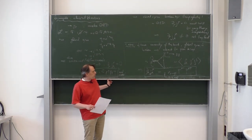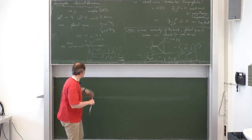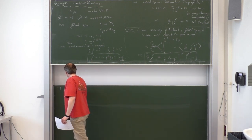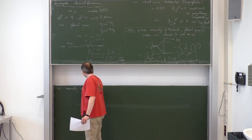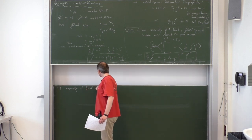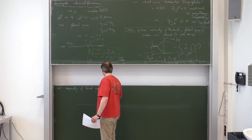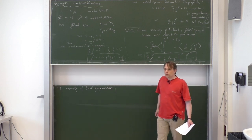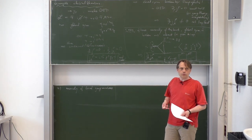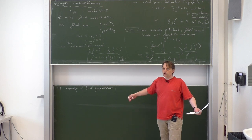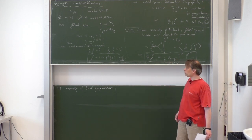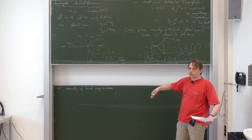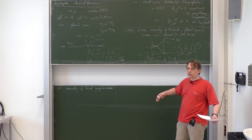Now let us look at the second possible case: local symmetries. Let us suppose there is an anomaly of a local symmetry — in other words a local symmetry is gauge invariance. Gauge invariance is not really a symmetry; it means there is a redundancy in the description variables of your theory, which you can use to gauge away unphysical degrees of freedom and make manifest the physics content. If there is an anomaly in this gauge invariance, the theory just becomes inconsistent because the interpretation of physical versus unphysical degrees of freedom breaks down.